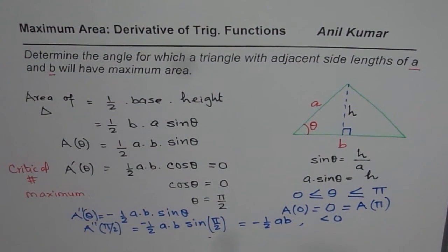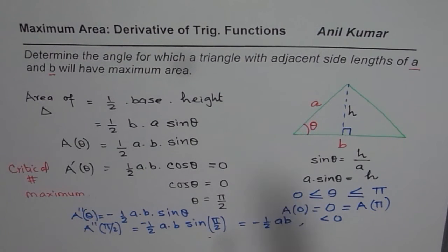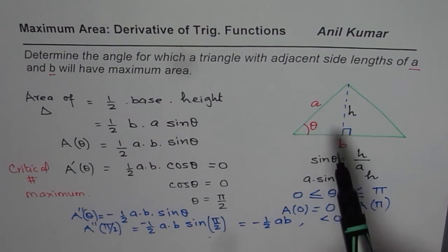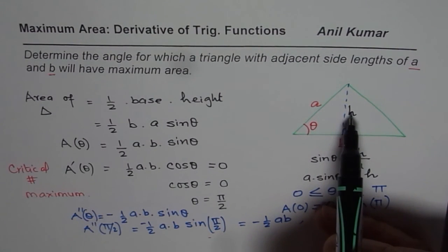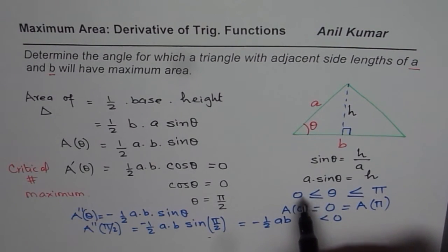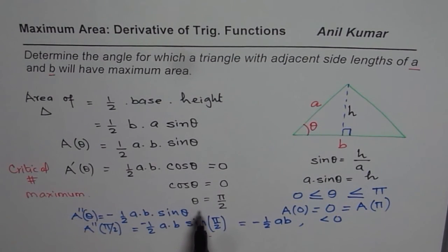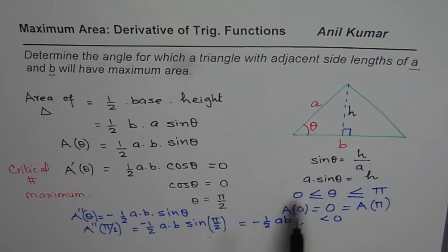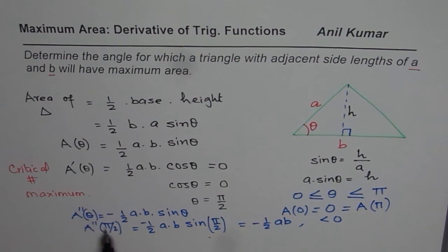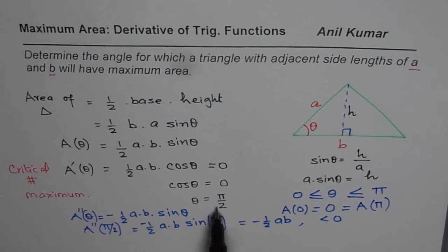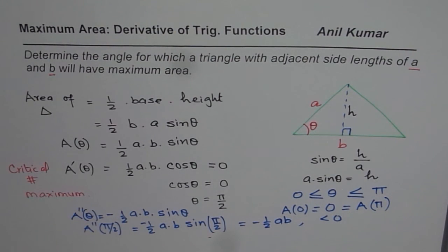So in this video, what we have learned is that for any triangle, if we are given two sides, then for theta equals pi by 2 or 90 degrees, we will get maximum area. We have also seen that in a right triangle, height can be represented as A times sin theta. We reviewed the strategy of finding critical numbers as maxima using boundary conditions and the second derivative test. If the second derivative is negative, the critical number indicates a maximum. This video forms the base for most of our upcoming questions. Thank you and all the best.